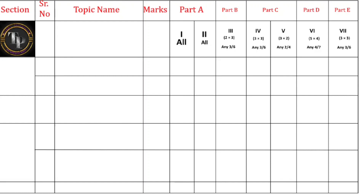Part B belongs to two-mark questions. Out of six two-mark questions, you have to write three. Talking about Part C, it is again divided into two parts: Roman number 4 and Roman number 5. Roman number 4 belongs to physical chemistry and Roman number 5 belongs to inorganic chemistry. Remember, section-wise marks are distributed here. For three-mark questions, out of six you have to write three, and out of four you have to write two questions.